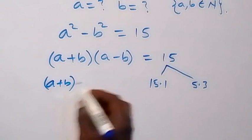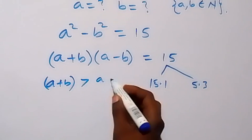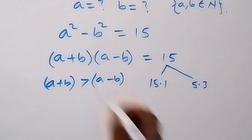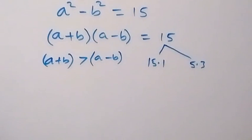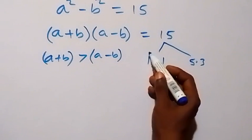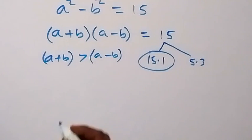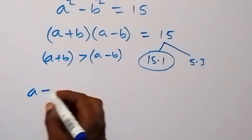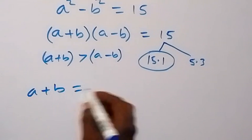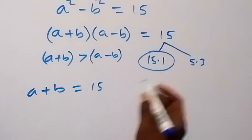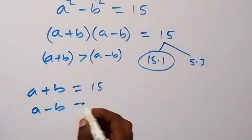From here, the first bracket is bigger than the second. That is, a plus b is expected to be bigger than a minus b. So for the first case here, we have a plus b equals 15.